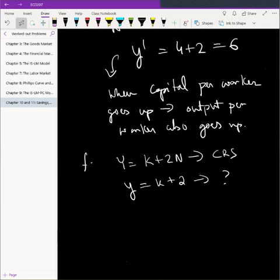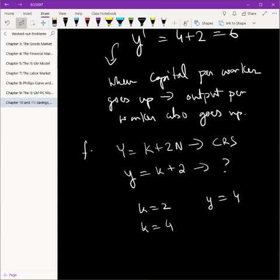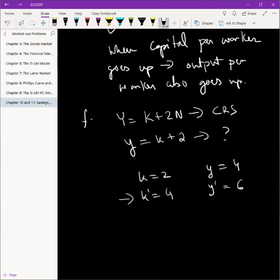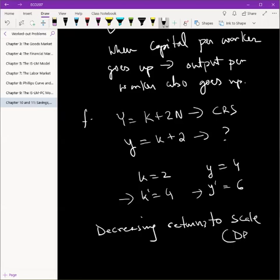What we know is that when k was 2, y was 4, and when k was 4, when k doubled, y increased of course, but it did not double. It increased by 6. So we've doubled the input, but the output has increased, but not by that much. It hasn't become 8, it has only increased by 50 percent. So this is called decreasing returns to scale, or effectively DRS.